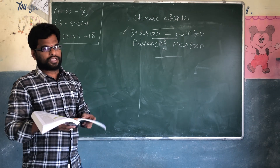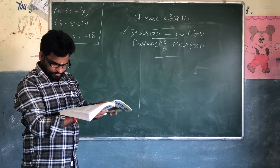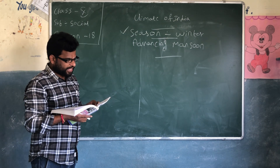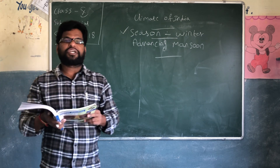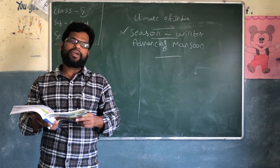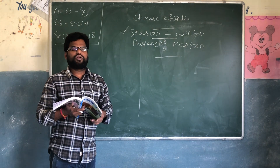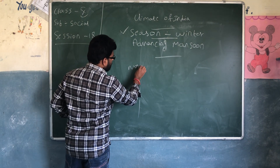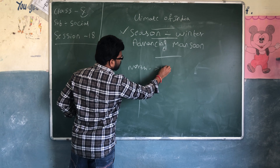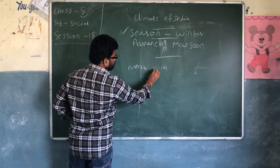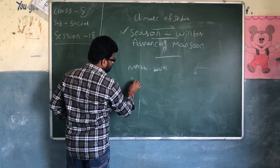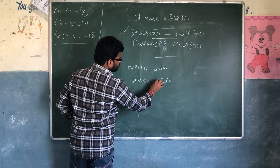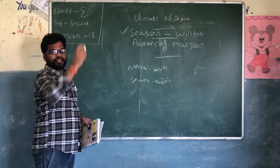Northern India experiences cold weather, while South India, especially the coastal areas, enjoys a moderate climate as the temperature remains well above 20 degrees Celsius. So north side is below 10 degrees Celsius, and South India side is above 20 degrees Celsius.